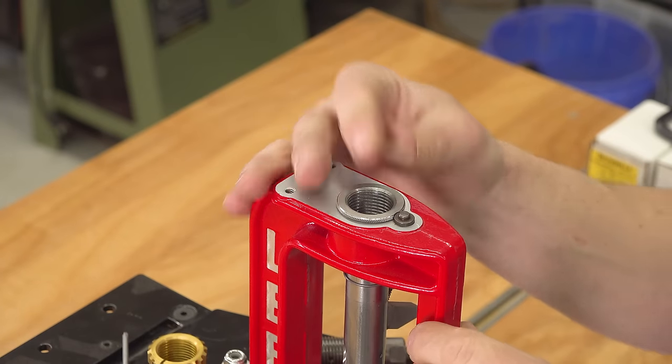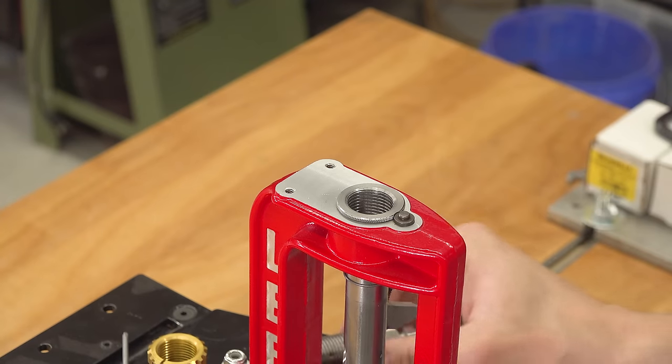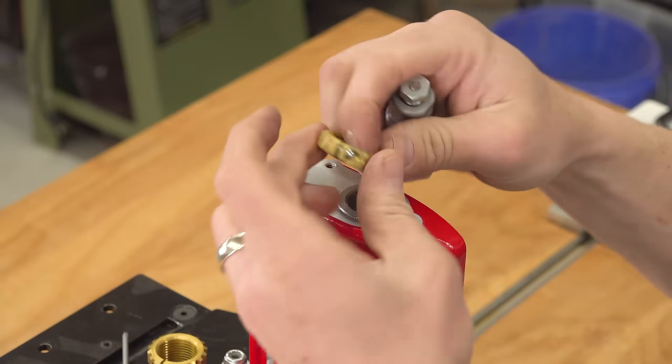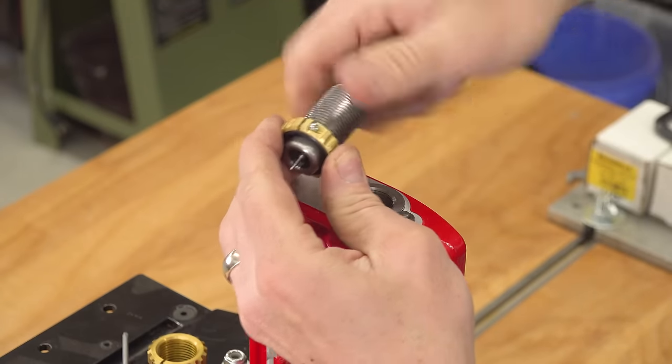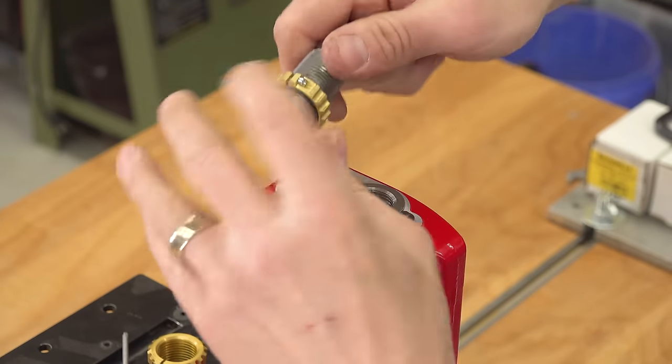This has the breech lock bushing system and I've got the bushing installed here and clicked into place. See the little button come up there so that we can treat this like a traditional 7/8-14 threaded press. I've got a 6.5 Creedmoor full length sizer die and we're going to take one of these Ultimate Lock Rings and start screwing that onto the die.